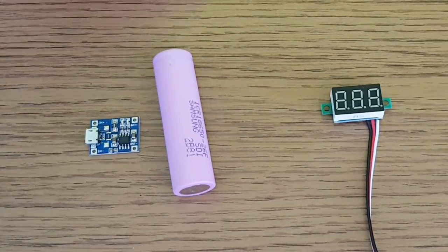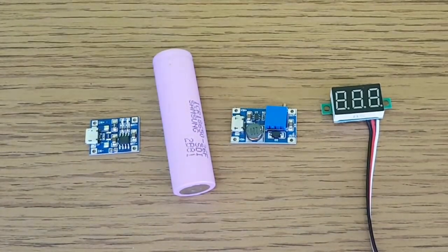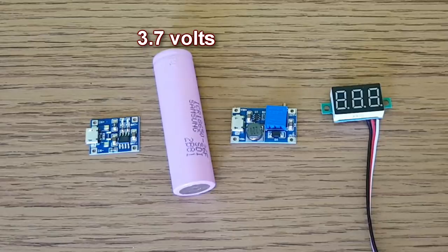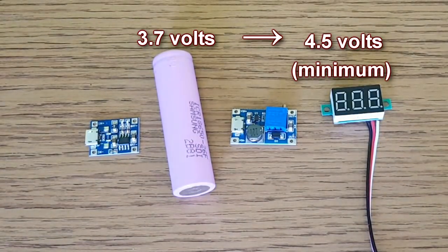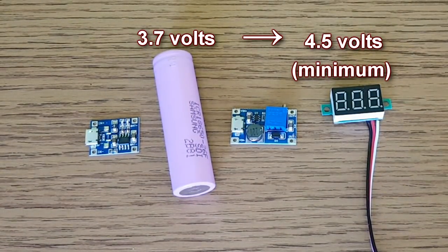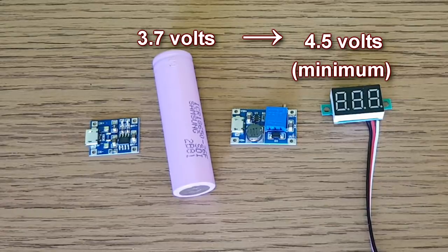A lithium battery and a boost converter. Because the battery's nominal 3.7 volts needs to be increased to a minimum voltage of 4.5 volts, which is the minimum supply voltage for the panel voltmeter.